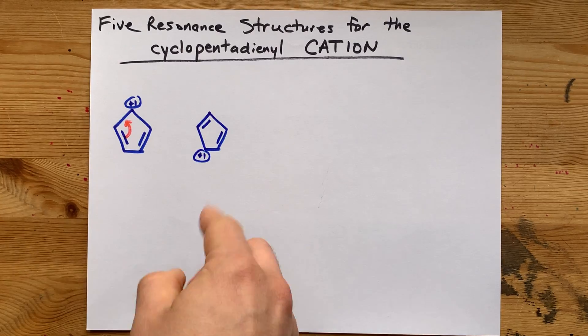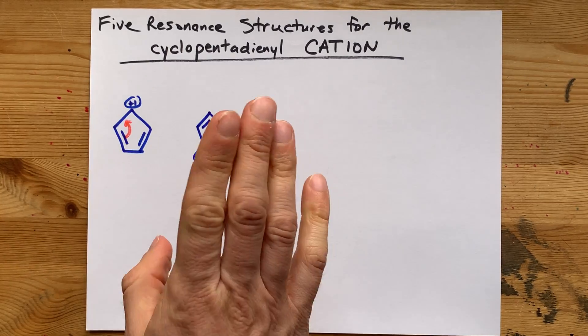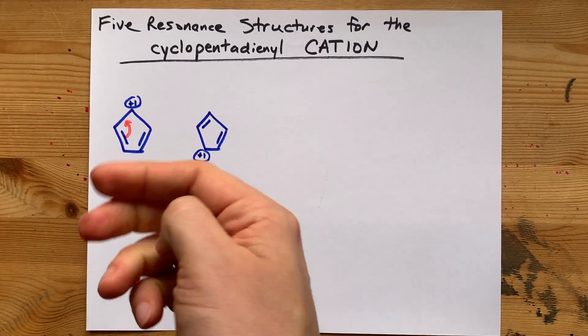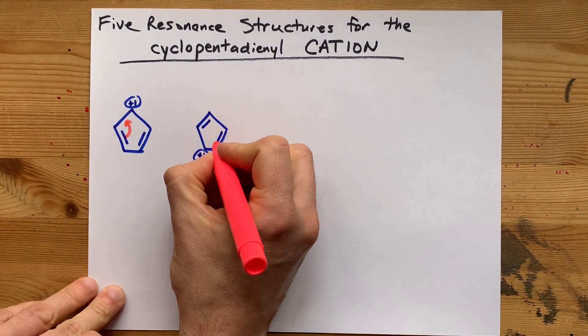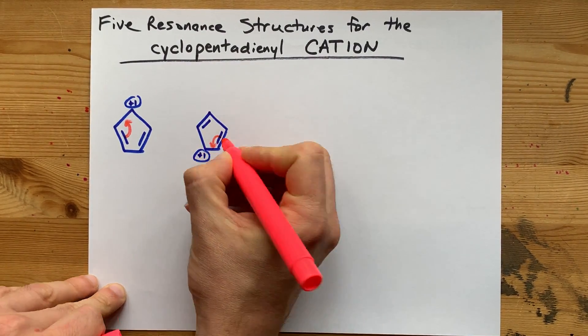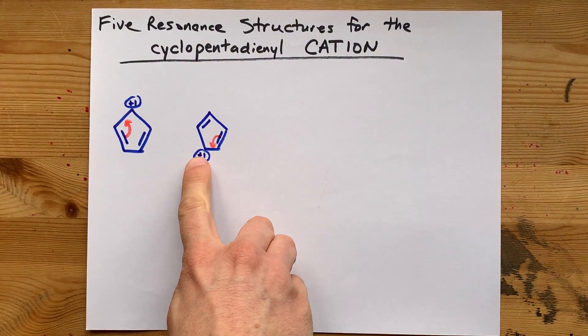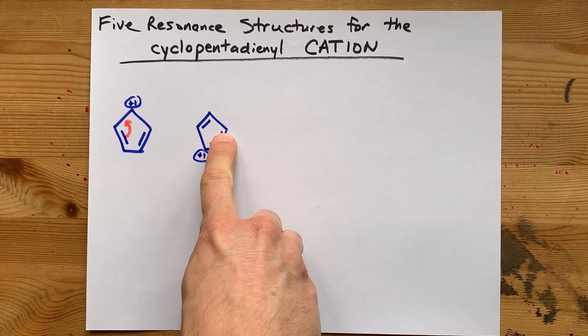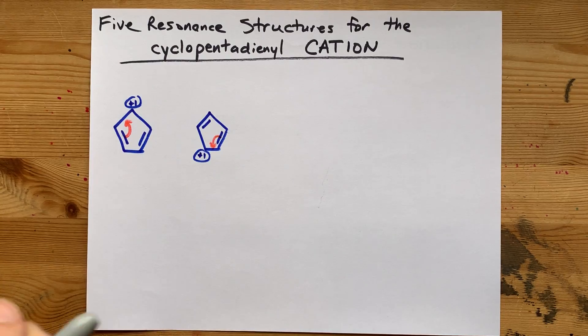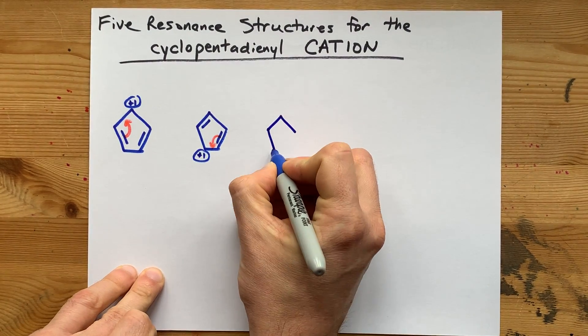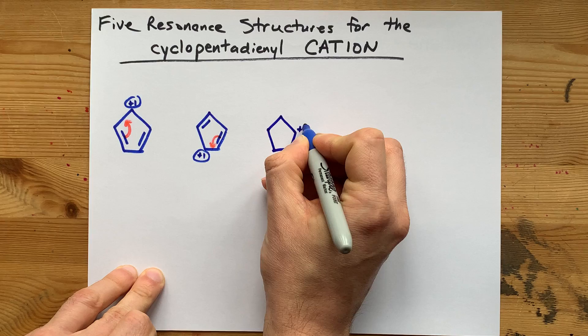Do you see what we're doing here? We're pushing things around to redistribute where the formal charge is. Keep going. Perhaps this double bond is attracted there, wants to satisfy the octet on that carbon, but now it leaves this one naked and alone.